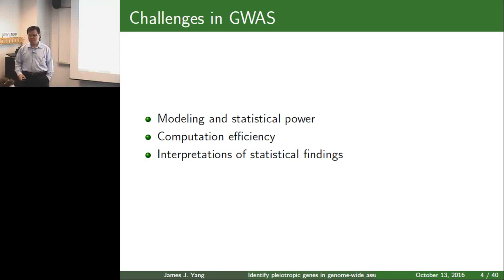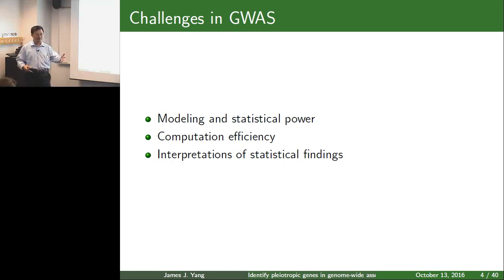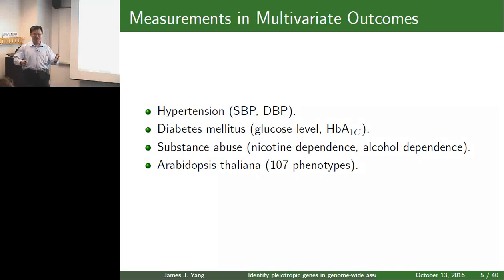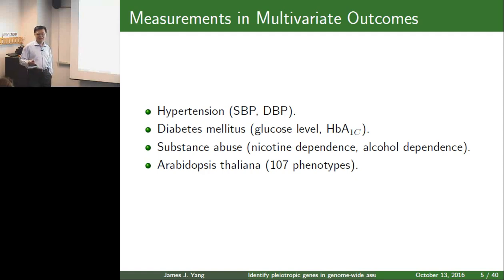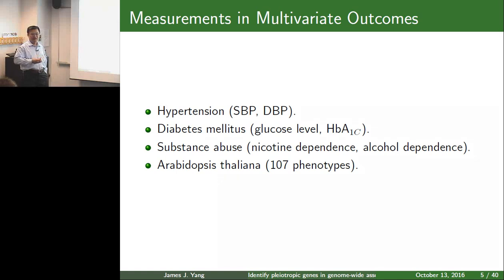How many multiple phenotypes do you usually encounter? I'll tell you on the next slide. Usually right now we use commercial arrays like Affymetrix or Illumina. Affymetrix 1.6 has one million SNPs — that's usually enough. So you just buy the commercial array and you can't change the genotype side. But you can determine your outcome phenotypes. It's very common to have multiple phenotypes. For example, for hypertension you can measure systolic and diastolic blood pressure.